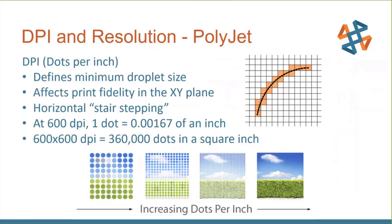PolyJet also builds in layers, but any jetting technology builds in dots per inch — how many droplets per square inch. At 600 by 600 DPI, each dot is about 1.5 thousandths of an inch, so in one square inch you'll find 306,000 dots. This gives it superior high resolution.